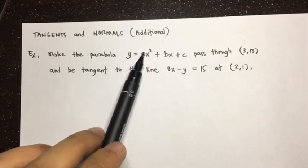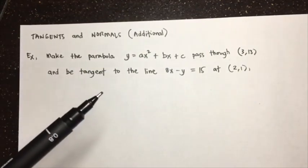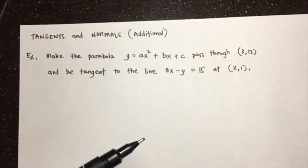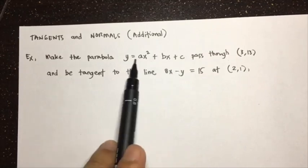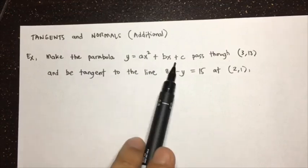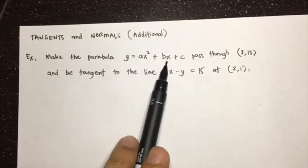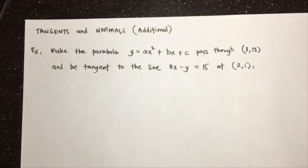We need to find the numerical coefficients a, b, and c. To solve this, we need to get the equation of the parabola that meets these conditions, making use of all the available data we're given.